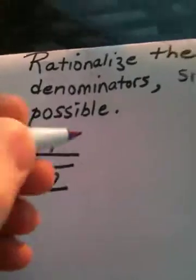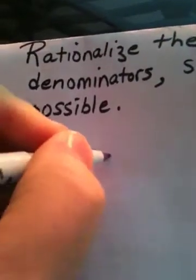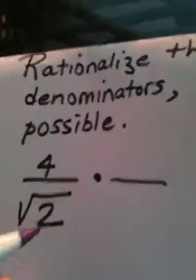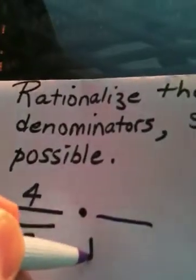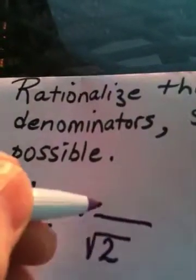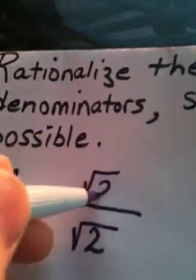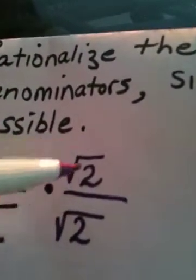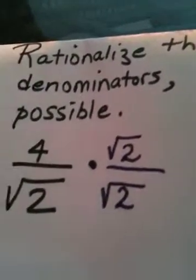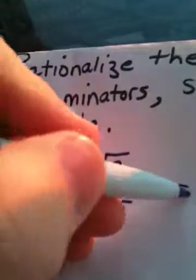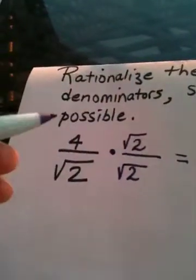So what we're going to do to rationalize this denominator, the trick or actually the technique, is we're going to multiply top and bottom by the square root of 2. What we do to the denominator, we do to the numerator. And in case you don't see why I'm doing that, watch what happens when I do this.